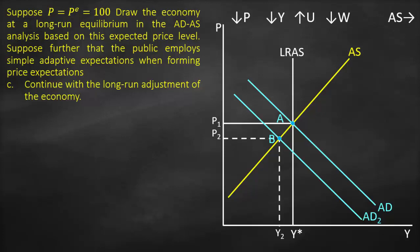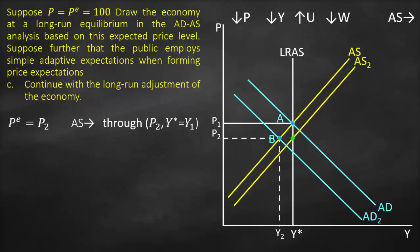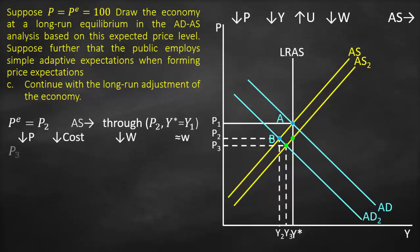Aggregate supply will shift to the right — but to which point? What will happen is, at P2, this will be our new expected price. Consequently, our aggregate supply will go through P2 and Y1 or Y*. Drawing this gives a new green point, so aggregate supply shifts to that point. This means we have a new intersection between aggregate demand 2 and aggregate supply 2, giving us a lower price at P3 and a higher output at Y3. We still have a lower price, so nominal wages will decrease and real wages will remain constant. We know that P3 < P2 < P1, and Y3 > Y2 but still lower than Y*, so we have not yet reached long-run equilibrium, because aggregate demand 2 doesn't intersect with aggregate supply and long-run aggregate supply at the same point.